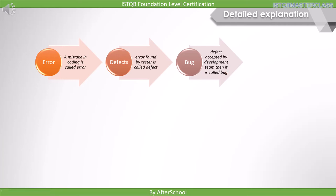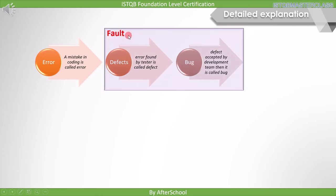So far we have three terms. If a programmer finds a mistake in their own code, then it is an error. If the mistake is found by a tester, then it is a defect. If that mistake is confirmed to be a problem, then it is called a bug. And when the bug is in this stage, then it is called a fault, because it is the cause of a failure.